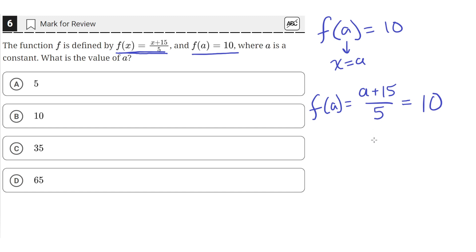We multiply both sides by 5. So on the left, we get a plus 15 equals 50, since 10 times 5 is 50.